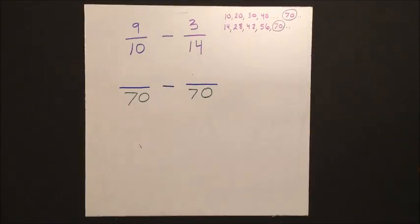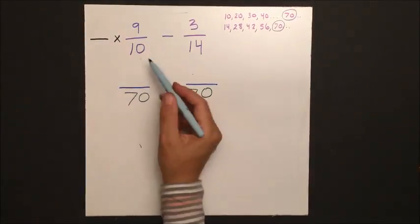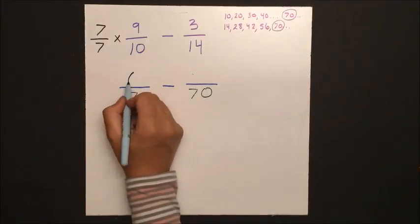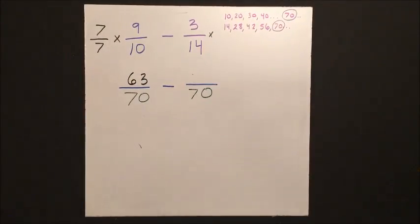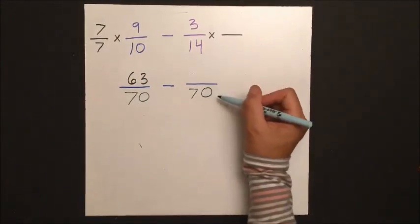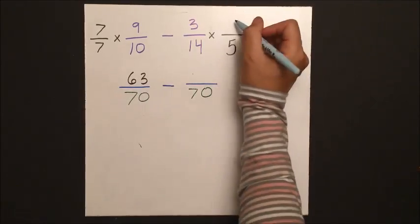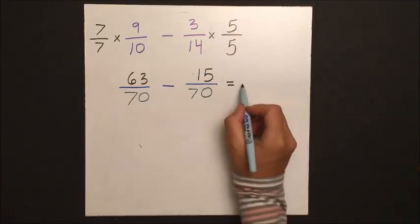So we ask ourselves, how did we get from 10 to 70? Well, multiply by 7, so we do the same thing to the numerator. And for our second number, 14 times 5 will give us 70, so we do the same thing to the numerator.